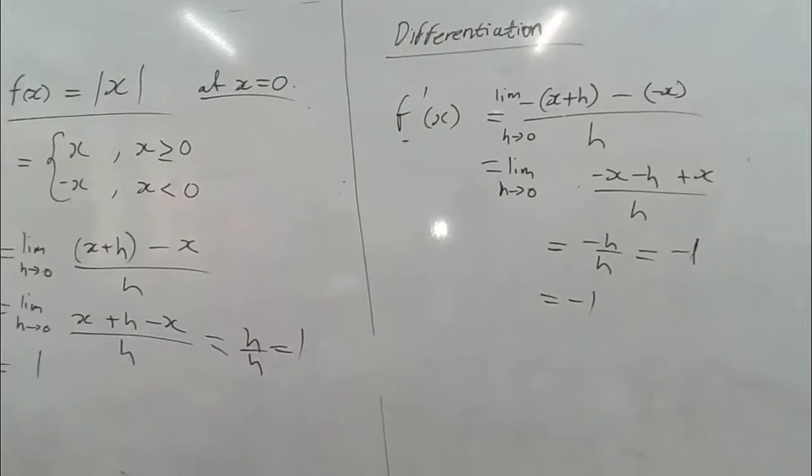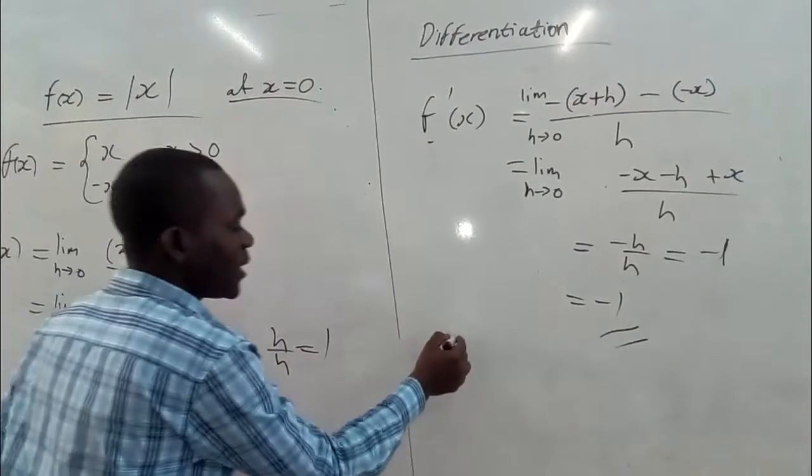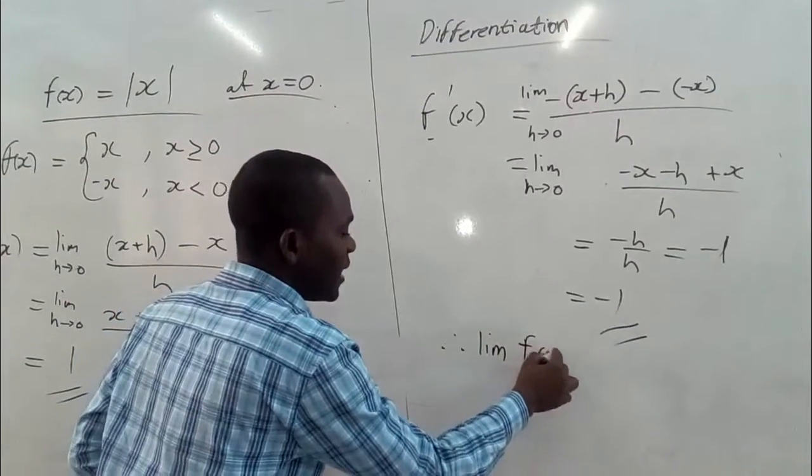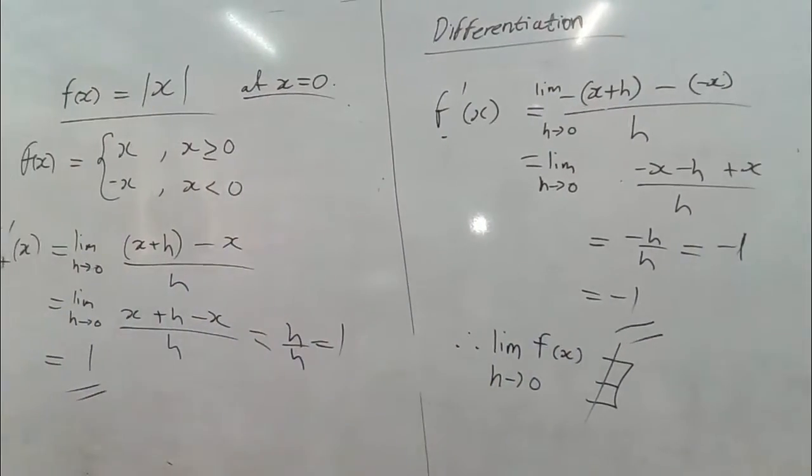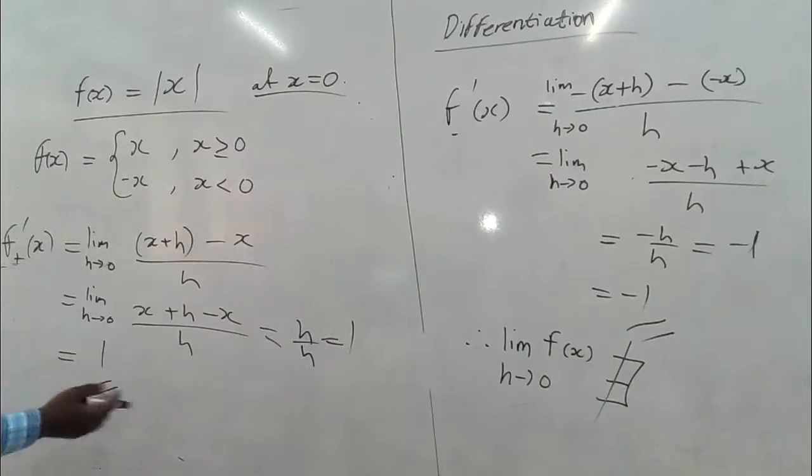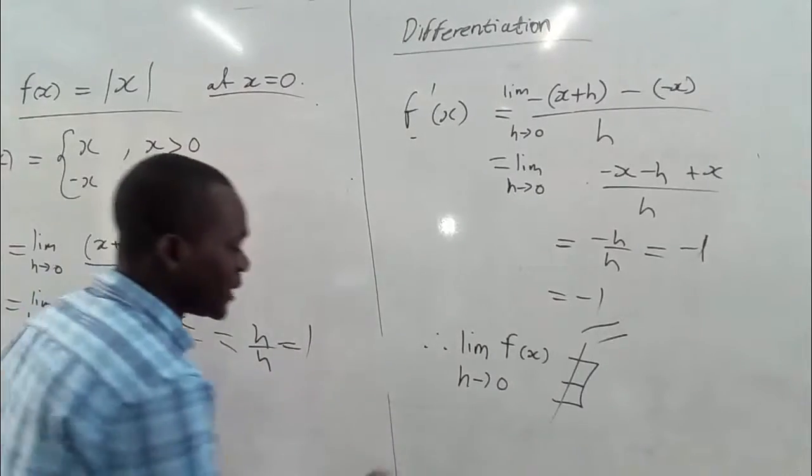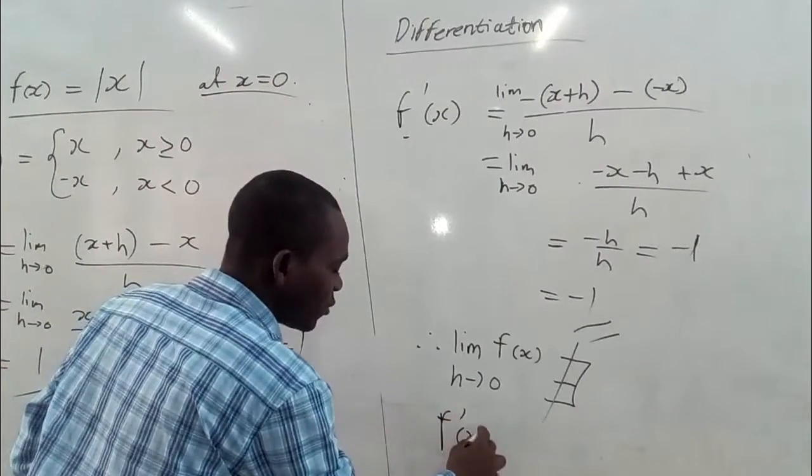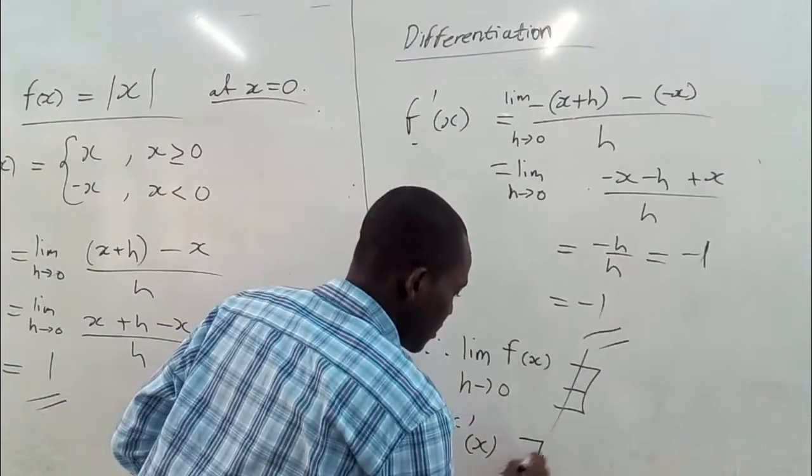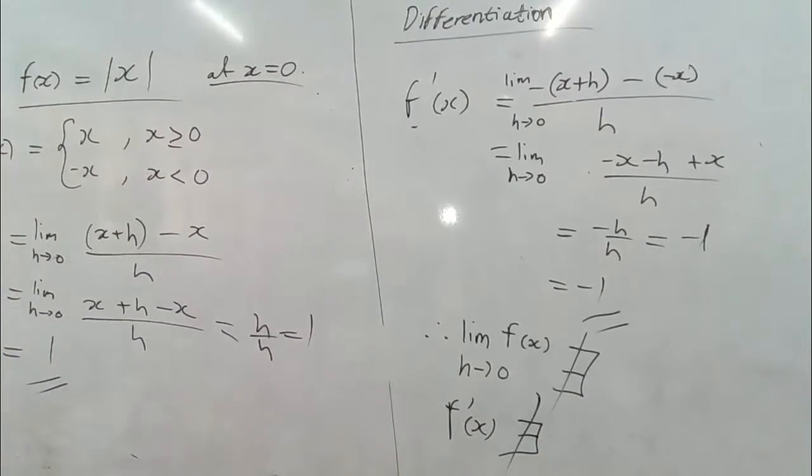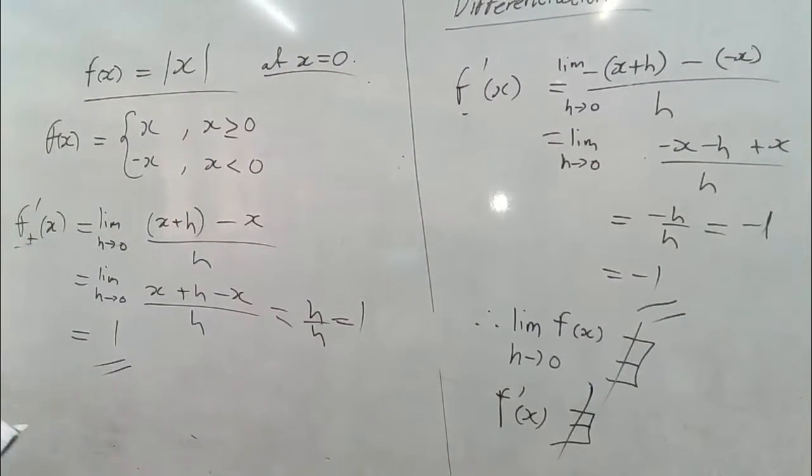We can confirm that negative 1 and positive 1 are not the same. We find that the limit of f(x) as h approaches 0 does not exist because they are different. We have positive 1 from the right and negative 1 from the left. If the limit as h approaches 0 doesn't exist, then automatically we can say that the derivative of f(x), that is the absolute value of x, also does not exist. This is how we prove that f(x) = |x| is not differentiable at x equals 0.